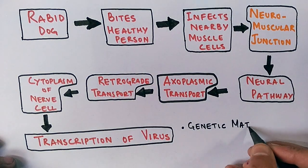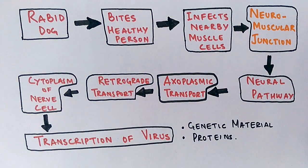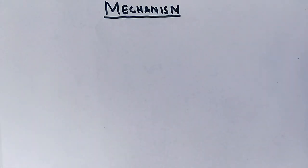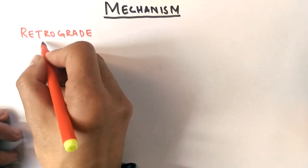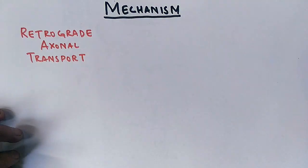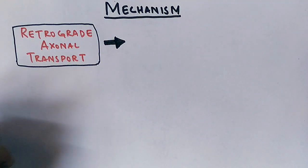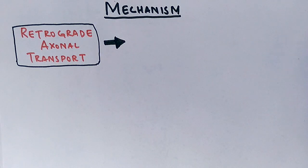What's the mechanism behind retrograde axonal transport? This retrograde axonal transport is a normal transport system in neuron cells where neuron cells send some particles outside the cell and take some particles inside the cell, like proteins and lipids, to work properly.